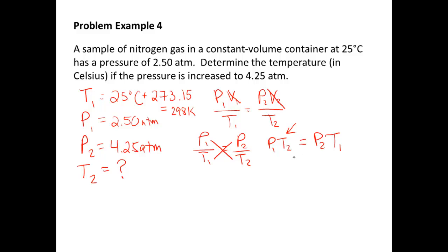So, that means P1 T2 is equal to P2 T1. And that's a little bit easier to solve for. We need to solve for T2. So, we're going to divide everything by P1. And we get that T2 is equal to P2 T1 over P1. So, let's plug those in here. So, P2 is 4.25 atmospheres. T1, make sure you plug it in correctly. That's 298 Kelvin. P1 was 2.50 atmospheres. Atmospheres cancel out. And it looks like we need three significant figures. So, when you calculate this, you should get 507.